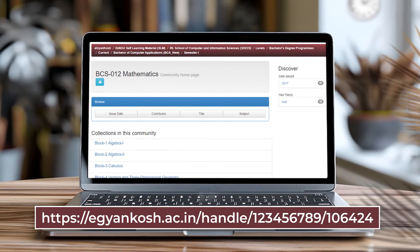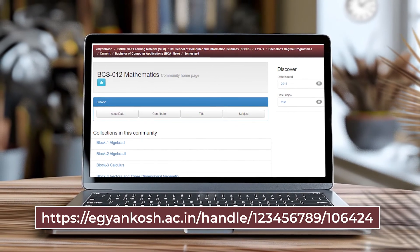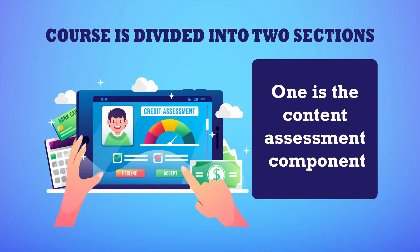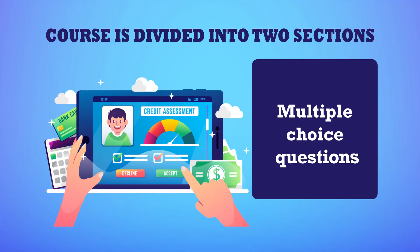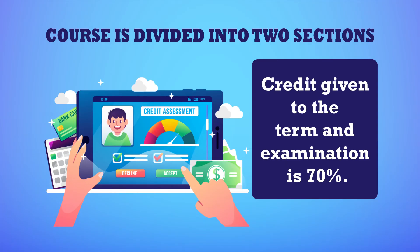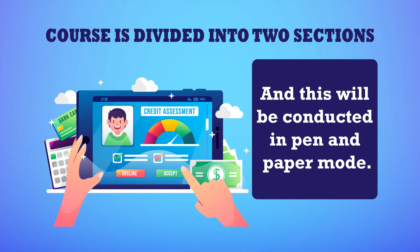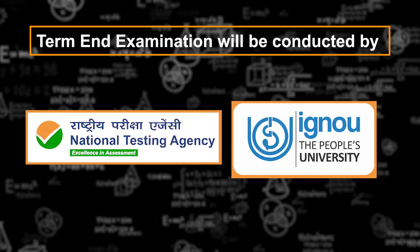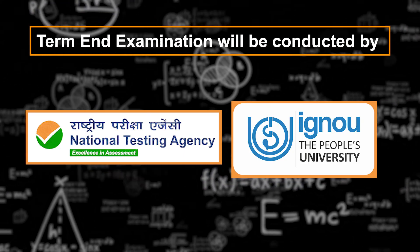So far as the self-learning material content of this course is concerned, we will be providing this course through the eGyan platform, where you will be able to find the entire course content. The evaluation is divided into two sections: one is a continuous assessment component covering 30 percent of the credit, comprised of multiple choice questions; and the term-end examination carries 70 percent credit, conducted in pen-and-paper mode by NTA or IGNOU.